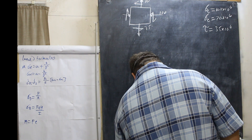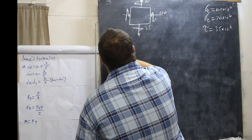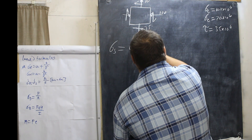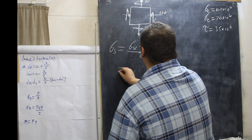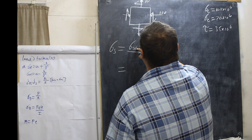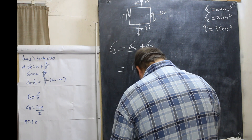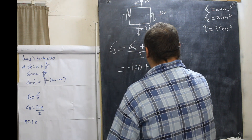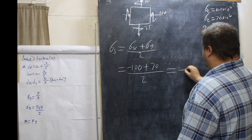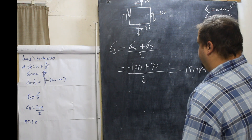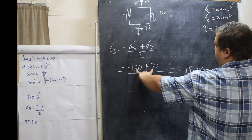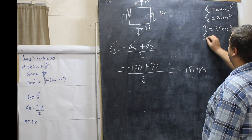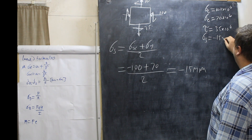First we have to take the average normal stress. So stress equals stress x plus stress y over 2. The stress x is minus 100 because it's going this way, plus the y stress which is going up, which is 70, divided by 2, which equals minus 15 mega pascals. Because minus 100 plus 70 is minus 30, and minus 30 divided by 2 is minus 15. So that stress is equal to minus 15 times 10 to the 6.